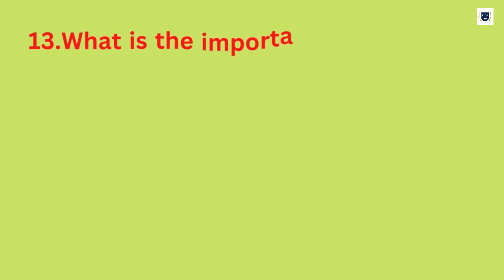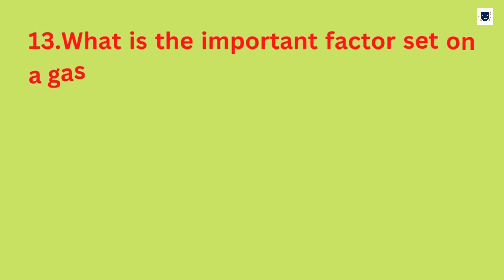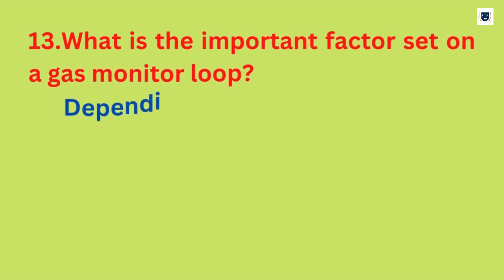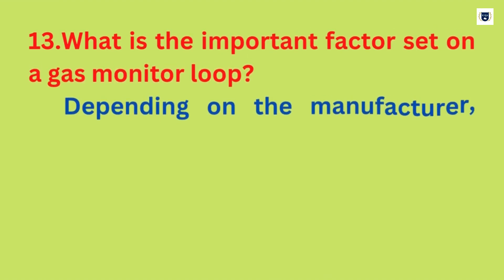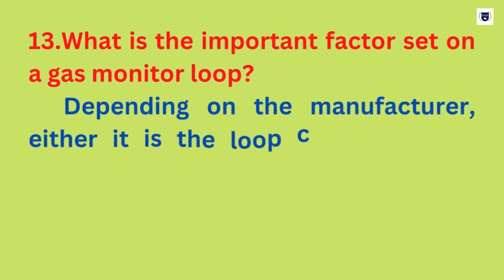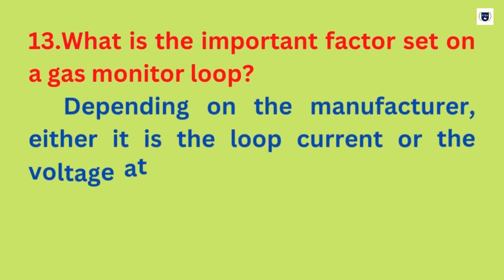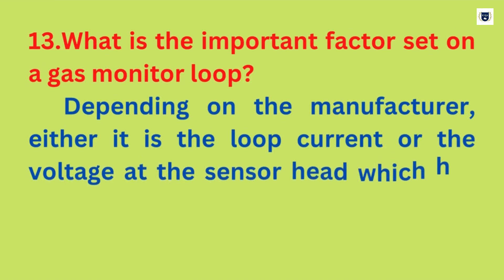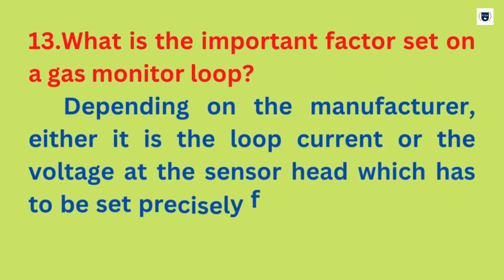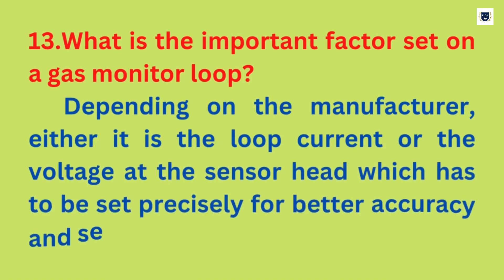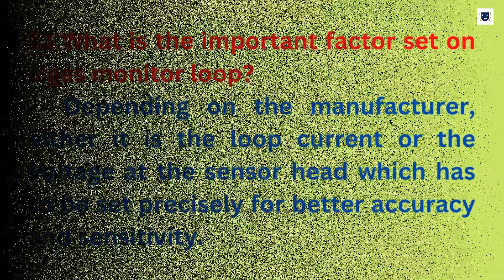What is the important factor set on a gas monitor loop? Depending on the manufacturer, either the loop current or the voltage at the sensor head has to be set precisely for better accuracy and sensitivity.